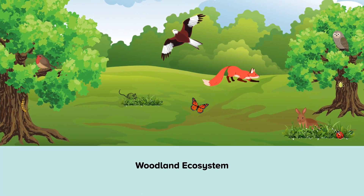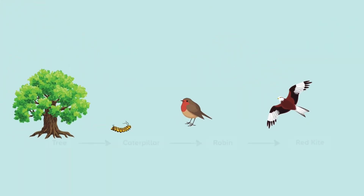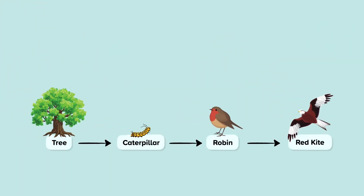Let's delve a little deeper into the connections between the biotic elements of an ecosystem, and look at food chains. Here we have a typical woodland ecosystem, where many organisms rely on each other for food and energy. We can show simple feeding relationships as a food chain. Each layer of a food chain has a name. The producer at the start is a photosynthesizing organism, usually a plant. Everything after this is called a consumer.